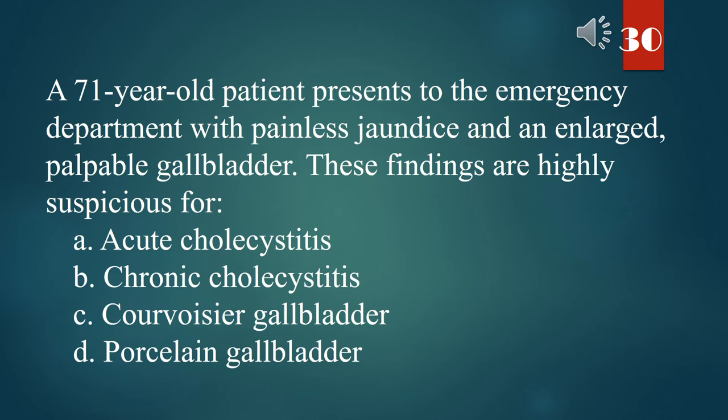A 71-year-old patient presents to the emergency department with painless jaundice and an enlarged, palpable gallbladder. These findings are highly suspicious for: A. Acute cholecystitis. B. Chronic cholecystitis. C. Courvoisier gallbladder. D. Porcelain gallbladder. The answer is C. Courvoisier gallbladder.